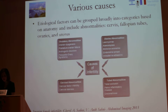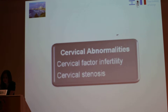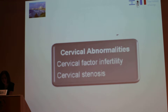There are different etiological factors that can be grouped broadly into categories: ovulatory abnormalities, uterus abnormalities, tubal abnormalities, and cervical abnormalities. For cervical abnormalities, ultrasound and MRI are not the ideal imaging modalities to discuss the etiology of infertility.